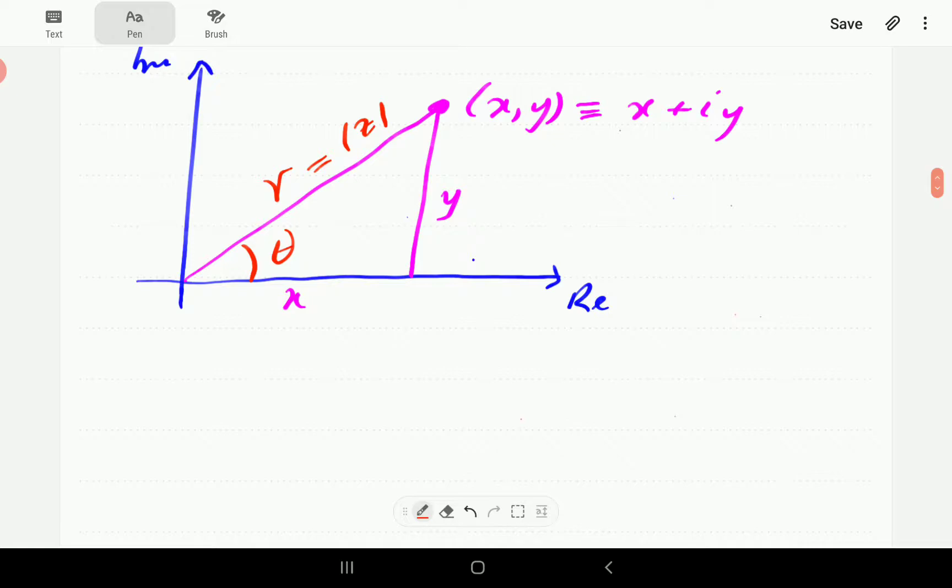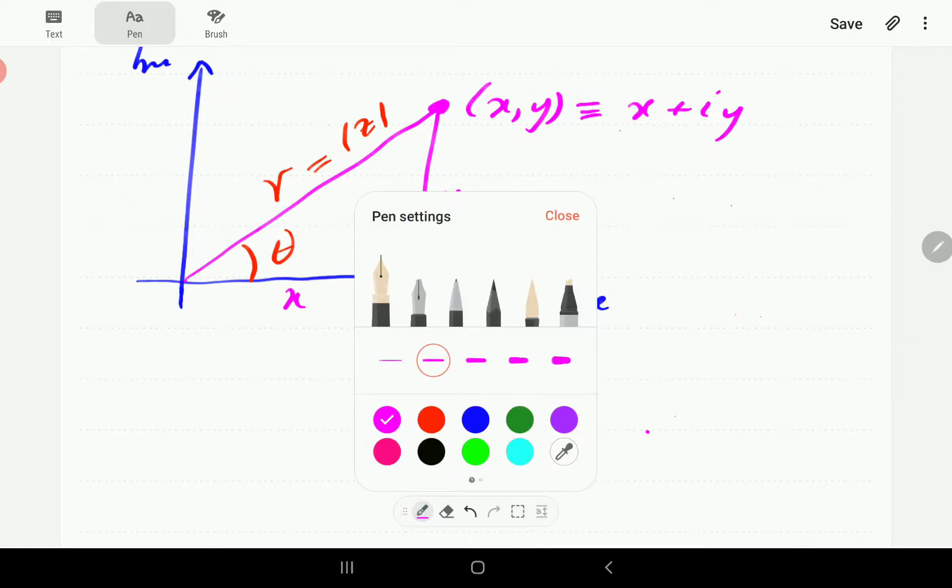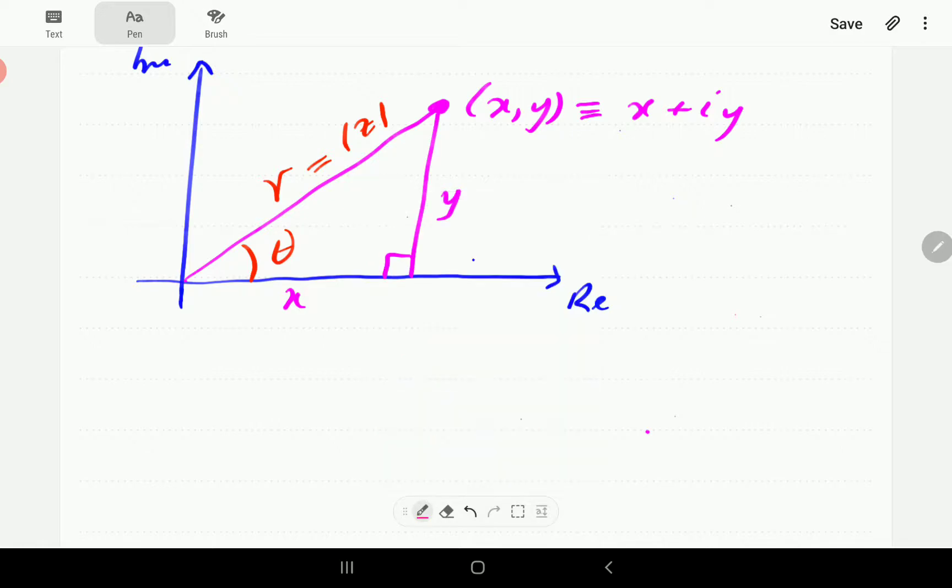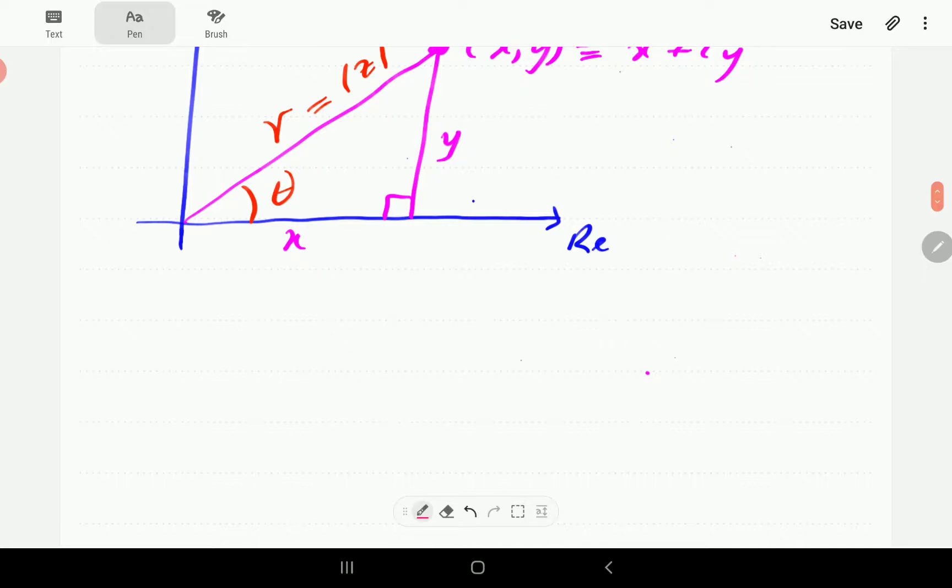Now, so this is a right angled triangle. Now if you remember your SOHCAHTOA, then you're going to recall that the formula that connects y, theta, and r is the sine formula, namely sine theta is equal to y over r.